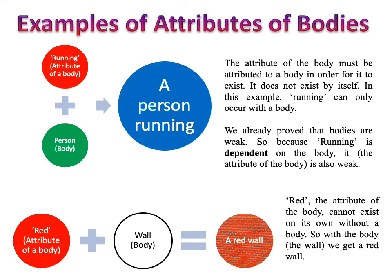Likewise, take the example of a brick wall — a red wall. The wall is a body and it being red is an attribute of a body. Red, the attribute of the body, cannot exist on its own without a body. So this body — the wall — if it joins with the attribute of the body, red, we get a red wall.